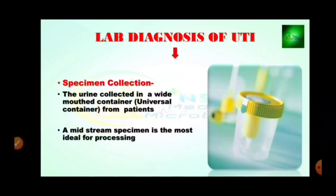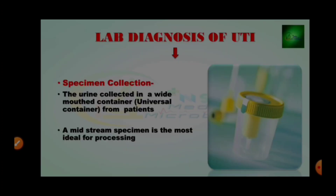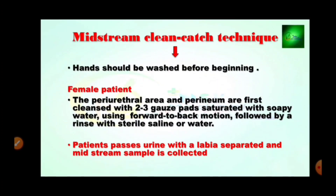Now for lab diagnosis of UTI — how can we diagnose UTI infection? First, we collect the specimen. Urine is collected in a wide-mouth container such as a universal container from patients. Most commonly, samples are collected as midstream urine, which is the most ideal for processing. For the midstream clean-catch technique, hands should be washed before beginning. For female patients, the periurethral area and perineum are cleansed with 2-3 gauze pads saturated with soapy water using a front-to-back motion, followed by rinsing with sterile saline or water. The patient passes urine with labia separated and the midstream sample is collected.